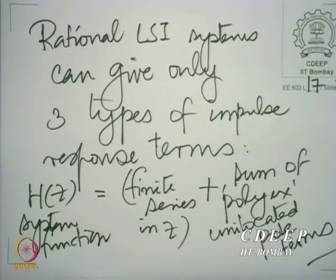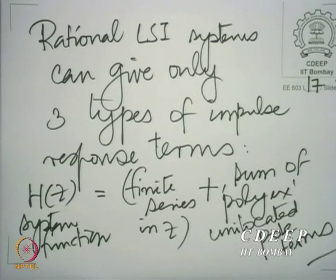Poly-x means terms which correspond to a polynomial in n multiplied by an exponential term. In the z-domain they look like: in the denominator you have one pole repeated more than once, and in the numerator you have degree one less than the denominator. That is how the Z transform of a poly-x term looks. So in the partial fraction expansion you have a finite series plus a sum of such poly-x terms, with poles of multiplicity greater than one.